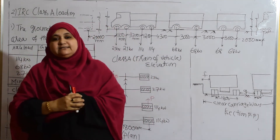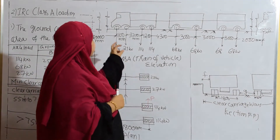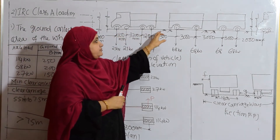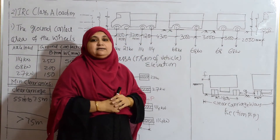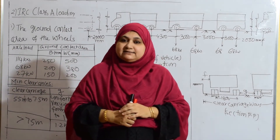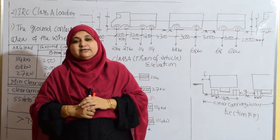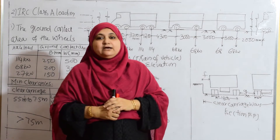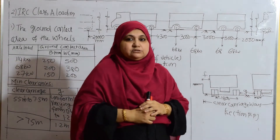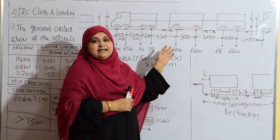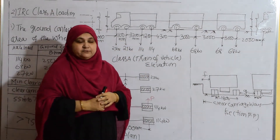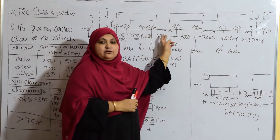This loading consists of a train of vehicles. A drawing has already been drawn for your convenience. This is a train of vehicles representing the Class A load. These loadings are given by IRC 6, 2016, Section 2, specification for loads and load combination. All of you can have a look in the code book. The same figure is there in IRC 6, 2016. This represents the Class A loading, a train of vehicles.